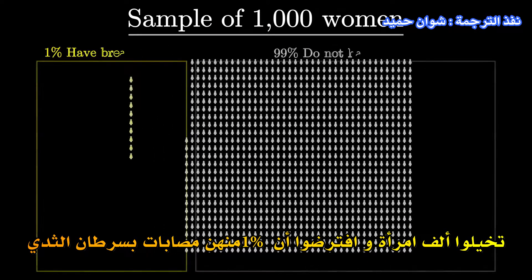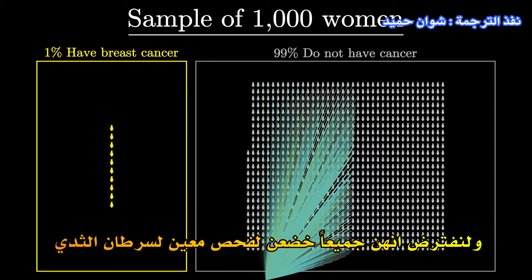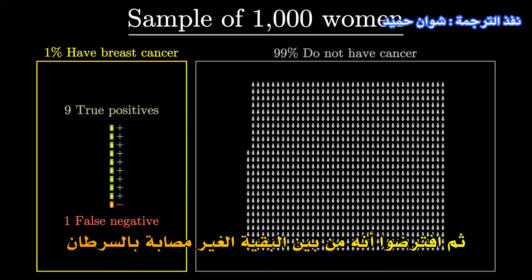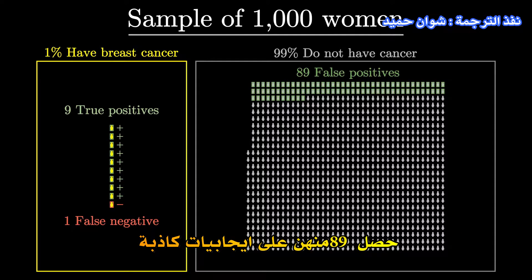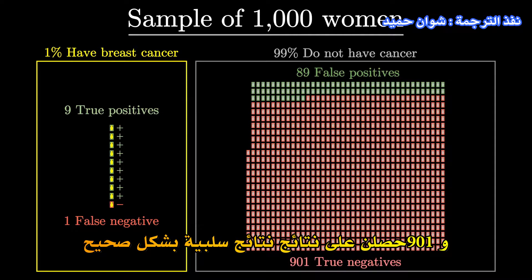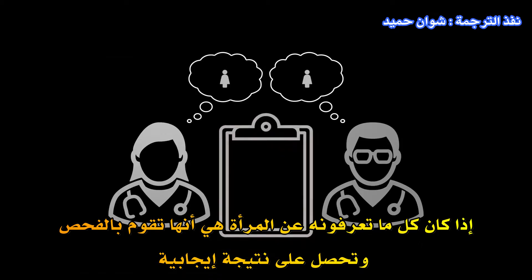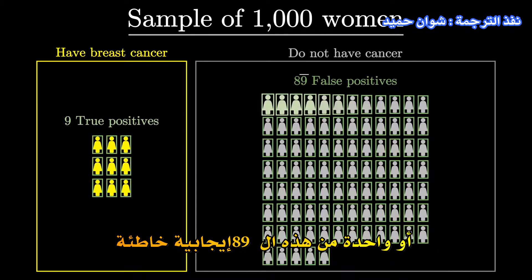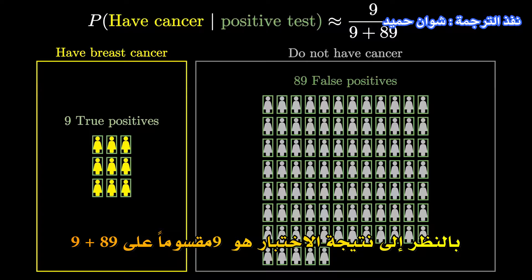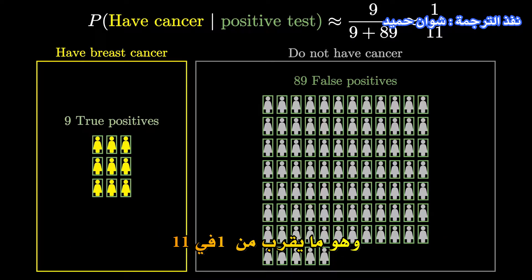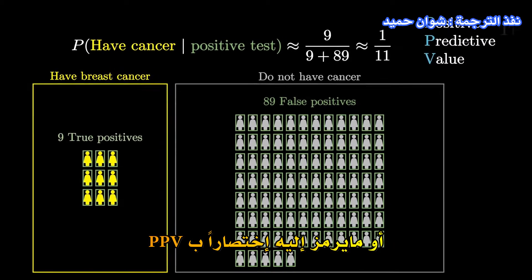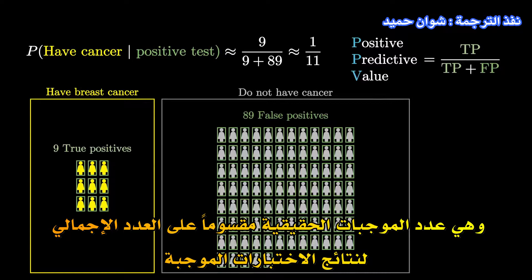Picture a thousand women, and suppose that one percent of them have breast cancer. Let's say they all undergo a certain breast cancer screening, and nine of those with cancer correctly get positive results, and there's one false negative. Among the remainder without cancer, 89 get false positives, and 901 correctly get negative results. If all you know about a woman is that she does the screening and gets a positive result, you know she's either one of these nine true positives or one of these 89 false positives. So the probability that she's in the cancer group, given the test result, is 9 divided by 9 plus 89, which is approximately 1 in 11. In medical parlance, you would call this the positive predictive value of the test, or PPV — the number of true positives divided by the total number of positive test results.